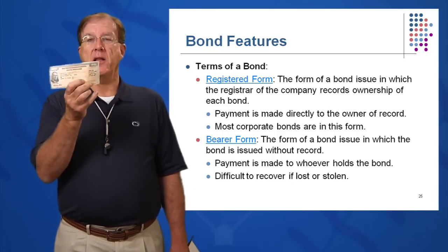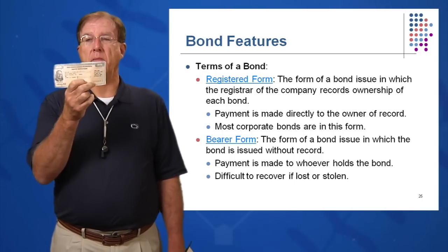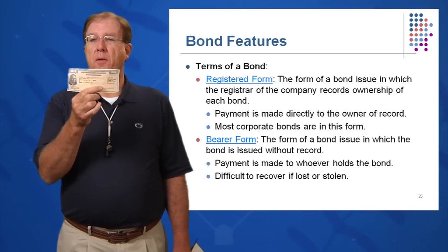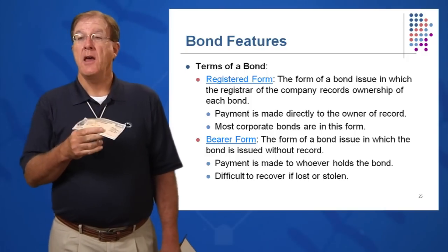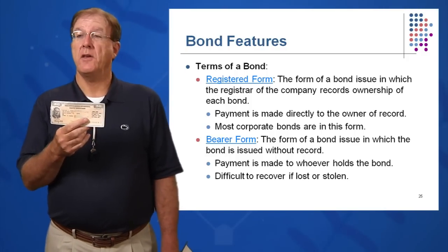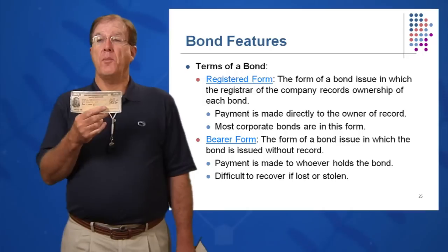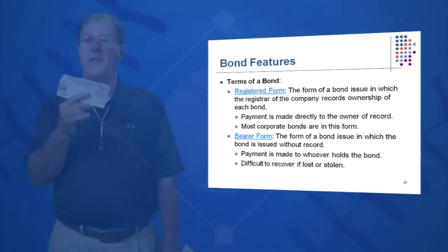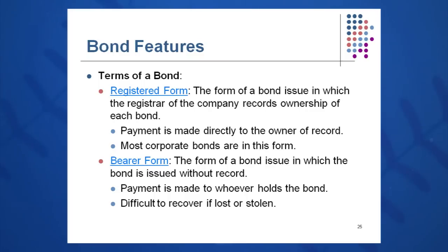You can find the value of the bond today by typing in the registration number at the bottom of the bond. This is a registered bond — it's in my name and my wife's name, and only we can cash it; payment is made directly to us. Most corporate bonds and treasury bonds are in registered form these days. Bearer bonds, in the old days, meant whoever held the bond was entitled to cash it — so if you dropped it and lost it, too bad. The recommendation is always buy bonds in registered form.